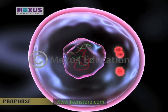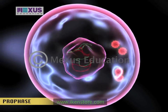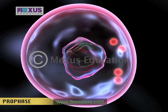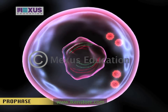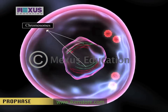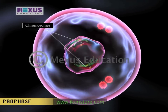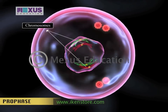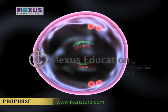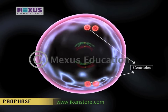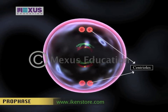During the prophase, the DNA molecules shorten and coil to form chromosomes. The nuclear membrane surrounding the chromosomes disintegrates and the centrioles migrate to the poles of the cell.